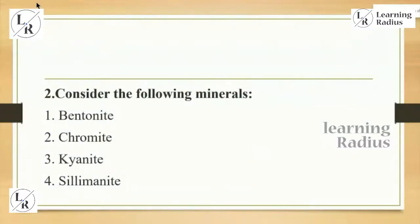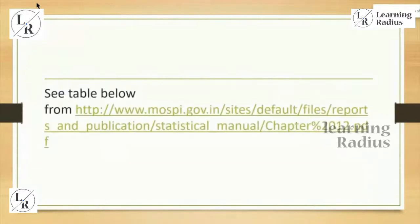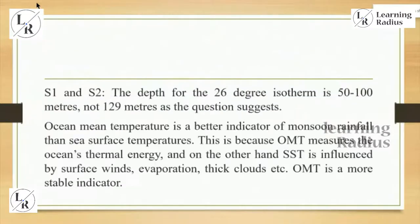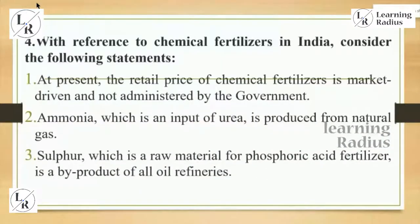The second question considers the following minerals: bentonite, chromite, kyanite, and sillimanite. Bentonite is not found in India — if you follow geography notes, chromite, kyanite, and sillimanite are minerals of India, but you won't come across bentonite. So bentonite is not there; the answer is options 2, 3, and 4 — a direct question. The third question is about ocean mean temperature, a direct physical geography question. Regarding the depth of 26 degrees Celsius isotherm, one statement mentions 129 meters, which was made wrong. Ocean mean temperature relates to 50 to 100 meters, and UPSC changed that particular statement — since it's a physical geography question, we won't go deeper into it.